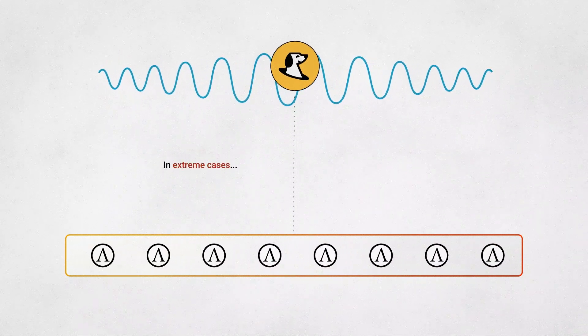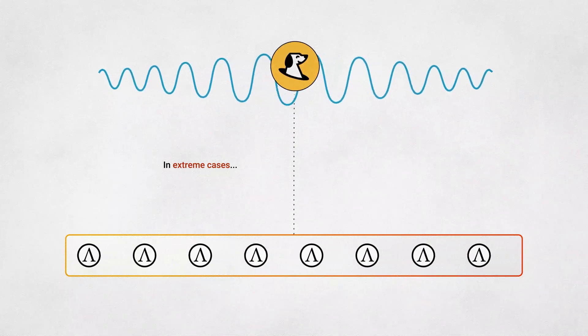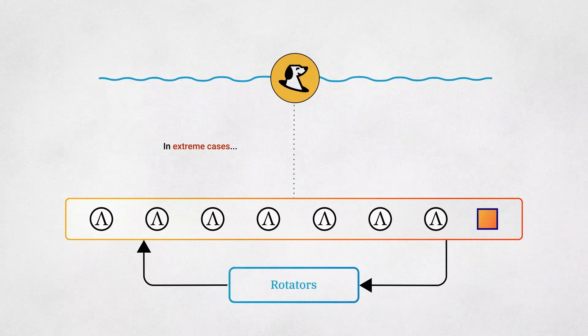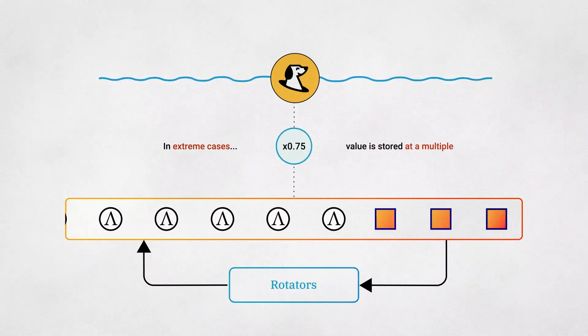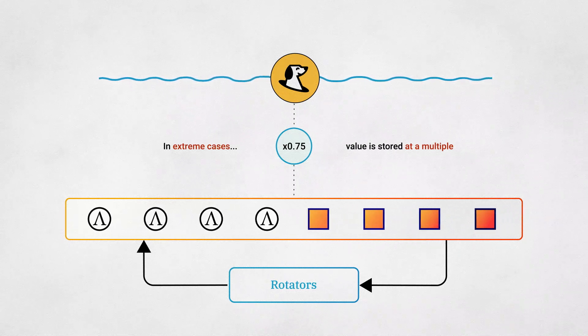Even in the extreme case where the collateral set fully matures and remains mature for an indefinite period of time, the protocol can still stabilize whenever rotations resume at a later date. The system will simply store value at a multiple of the original price based on the value of the collateral set at the time rotations begin anew.